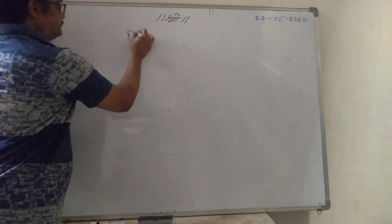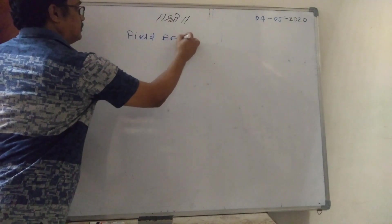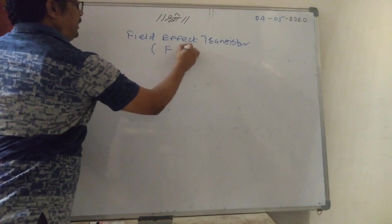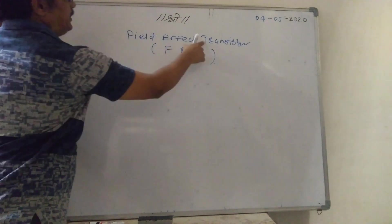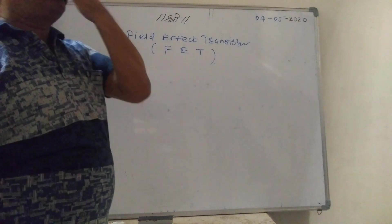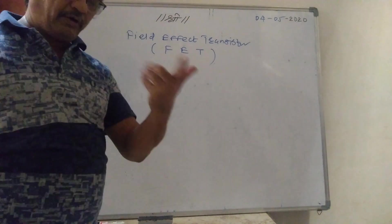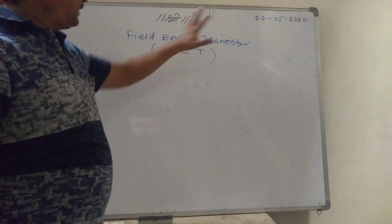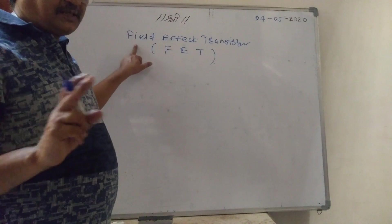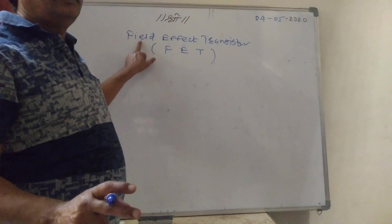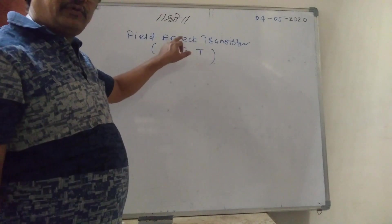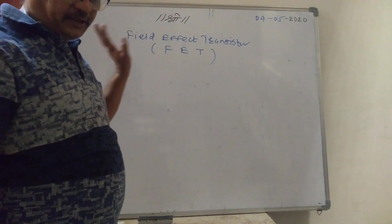Fourth unit: Field Effect Transistor, known as FET. Previously we have studied the Bipolar Junction Transistor in unit three — BJT. There are two types of transistors: BJT and FET. BJT we have studied already; now it is FET. The transistor which operates with the effect of field, meaning applied voltage or electric potential, is called a Field Effect Transistor.